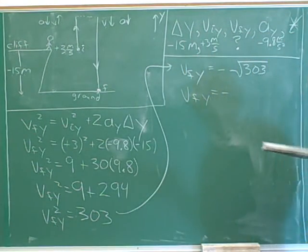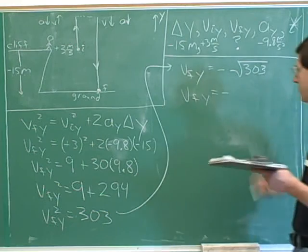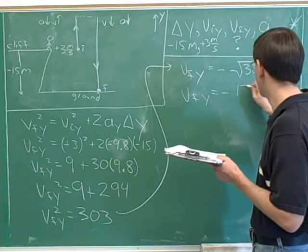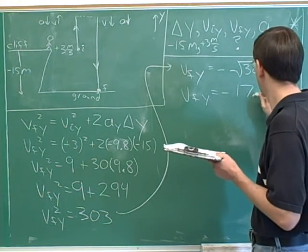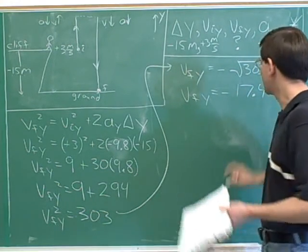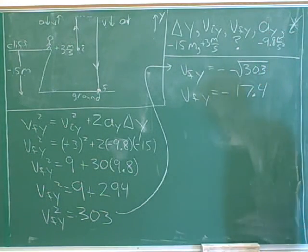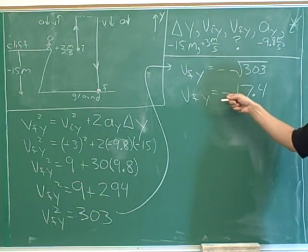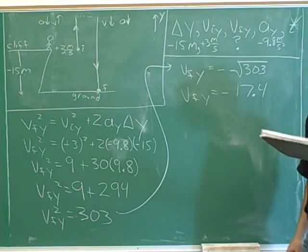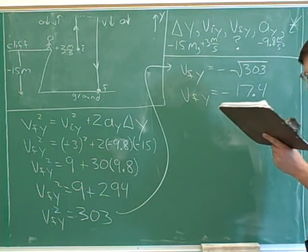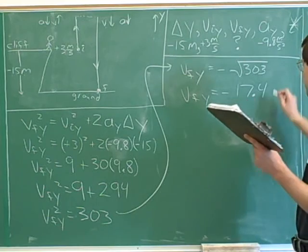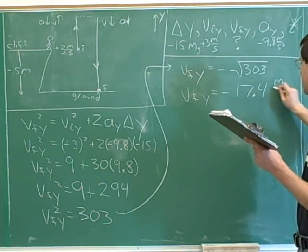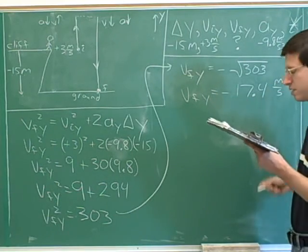We can use our calculator to find the square root of 303, which is approximately 17.4. The calculator gives the positive root, but we know we really care about the negative root. So we put a negative sign on that: negative 17.4 meters per second.